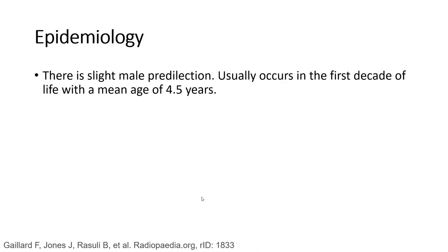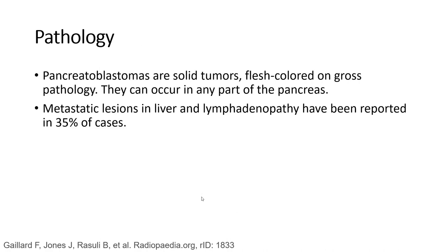There is a slight male predilection; they usually occur in the first decade of life with a mean age of 4.5 years. Pancreatoblastomas are well-circumscribed on gross pathology. They can occur in any part of the pancreas. Metastatic lesions in the liver and lymphadenopathy have been reported in 35% of cases.